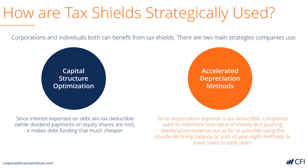In terms of accelerated depreciation methods, there are a couple of things to point out. One is that depreciation is a non-cash expense, meaning the company doesn't actually pay the expense to anyone. So it makes sense for them to accelerate the depreciation — make it as quick as possible, meaning make the expense as high as possible in the early years — so that they can lower their taxable income and lower their taxes, because taxes actually are a cash expense.